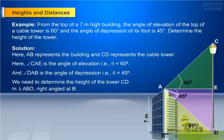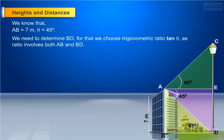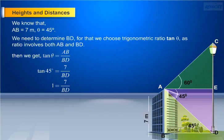In triangle ABD, right angle at B. We know that AB equals 7 meters and theta equals 45 degrees. We need to determine BD. We choose the trigonometric ratio tan theta, as the ratio involves both AB and BD. Then, tan theta equals AB by BD, since tan theta equals opposite side by adjacent side. This implies tan 45 degrees equals 7 by BD. As tan 45 degrees equals 1, by cross multiplication, BD equals 7 meters.